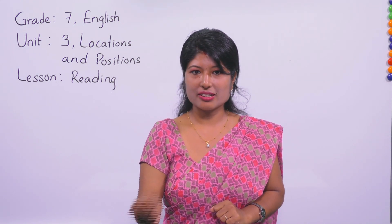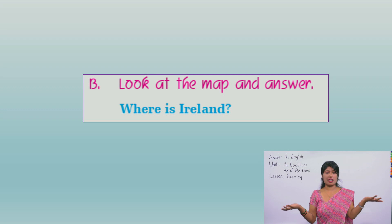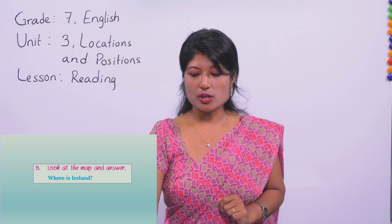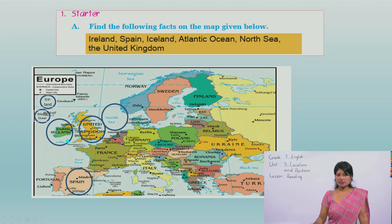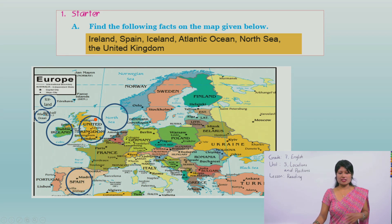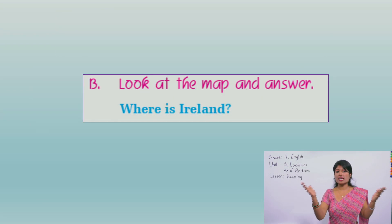Look at the map and answer: where is Ireland? Let's get back to the map again. Where is it? Ireland is nearby United Kingdom. You can say Ireland is in the western part of United Kingdom, or it is between Atlantic Ocean and Spain. So you can answer that way. This question was based on this map. We have solved this - where is Ireland.